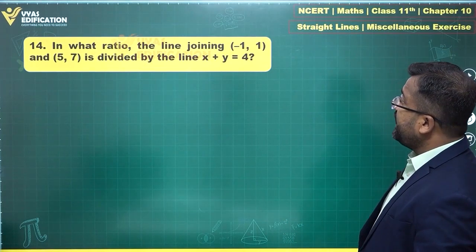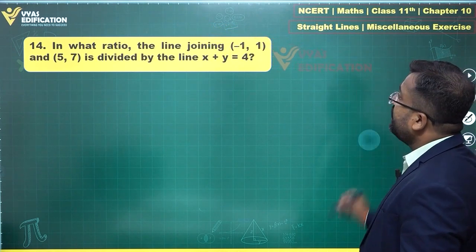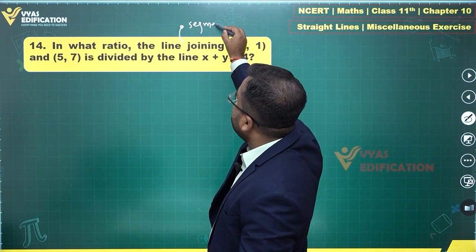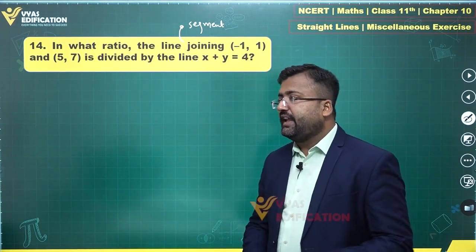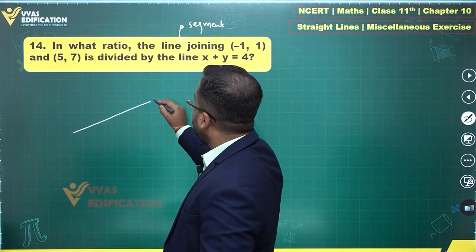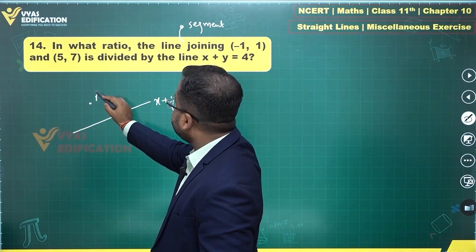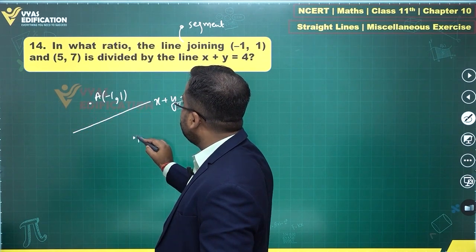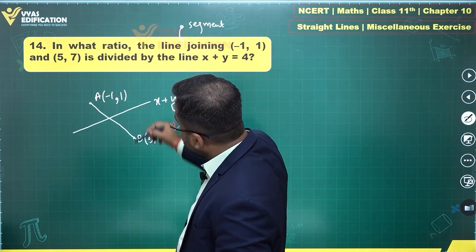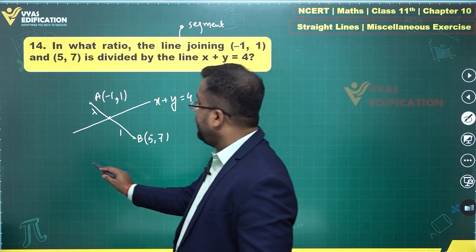Question 14 asks: in what ratio is the line segment joining (-1, 1) and (5, 7) divided by the line x plus y equals 4? So if this line divides the line segment in some ratio, let's call this ratio lambda is to 1, and we are supposed to find the value of lambda.